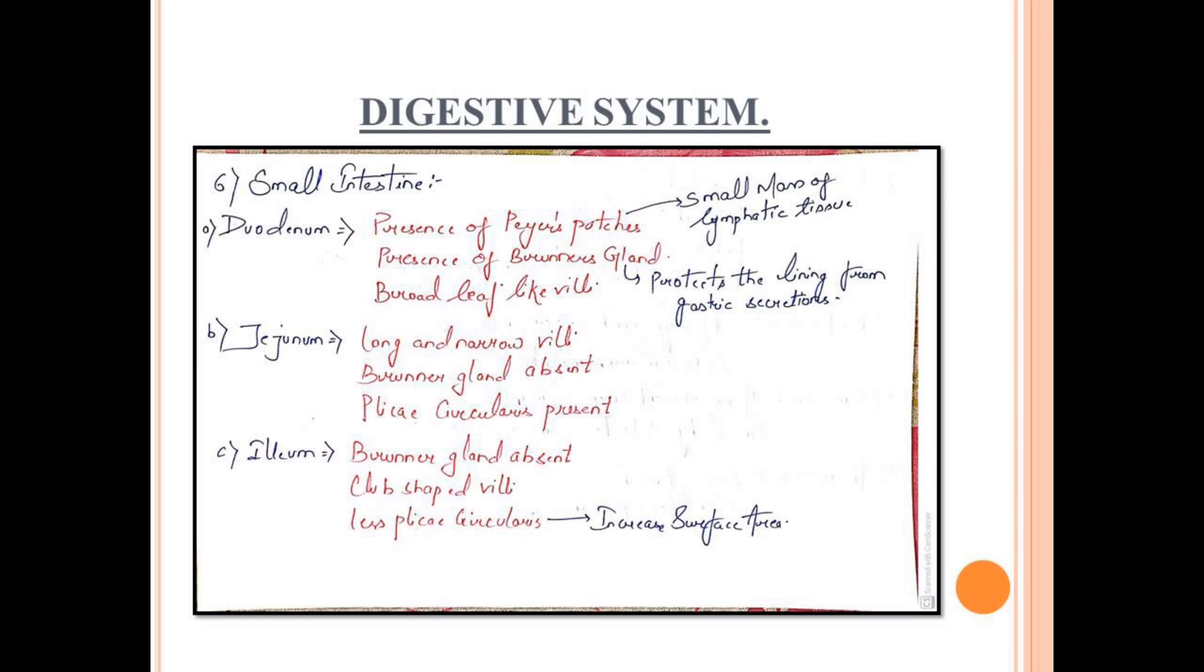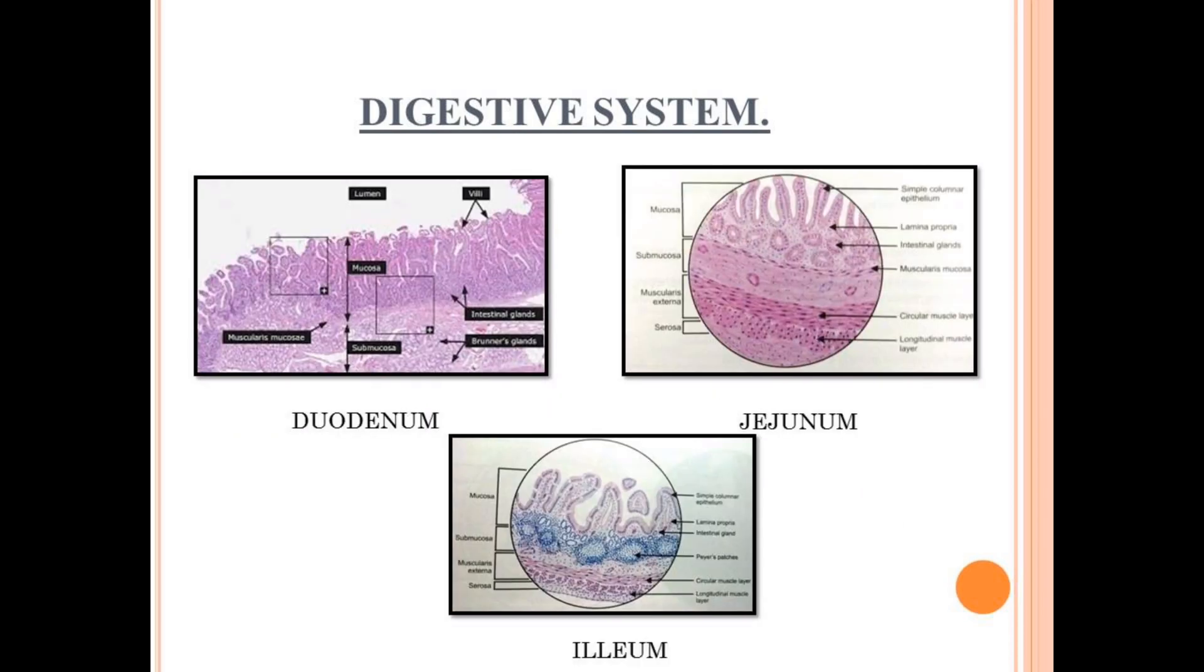Last part is ileum. Ileum does not have Brunner's glands. The villi are club-shaped. It will also have plicae circulares, but less compared to jejunum. Now these are some slides of duodenum, jejunum, and ileum. I think it might help you.